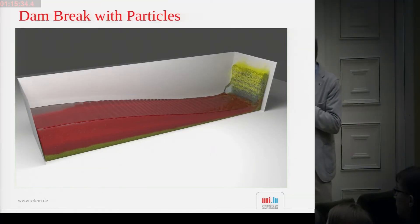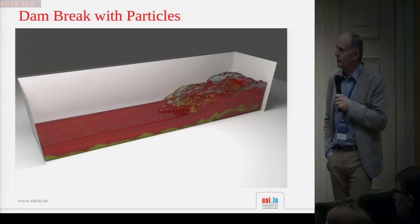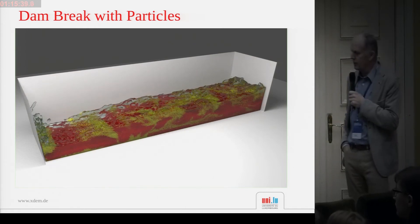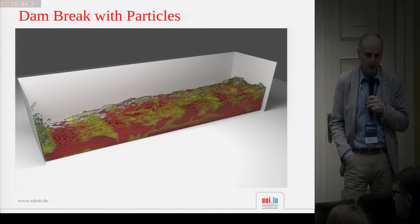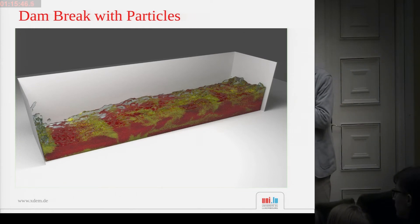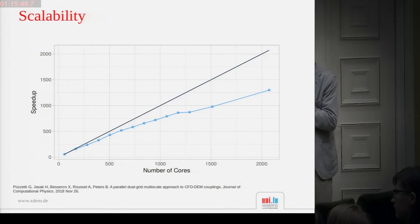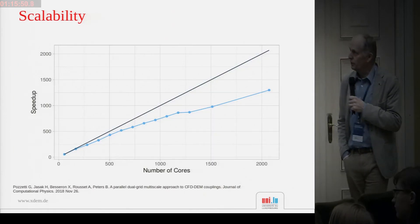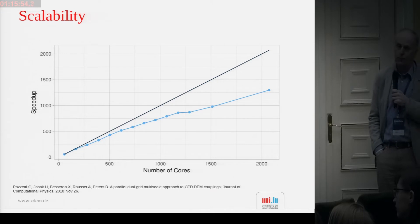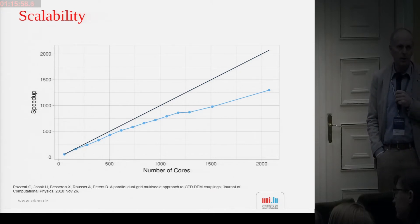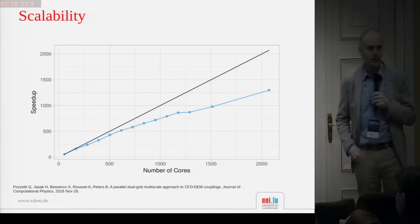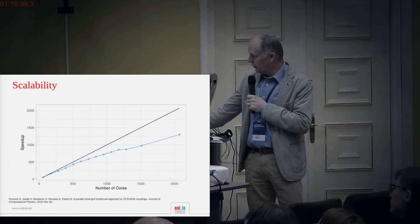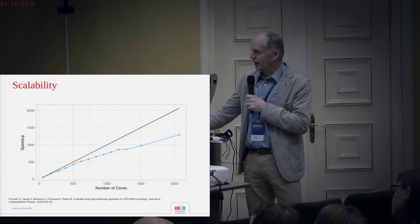Here is an example with approximately two and a half to three million particles and 10 million CFD cells. Looking at the scalability, we still achieve good scalability of almost 70% up to 2000 cores — we couldn't use more cores as that was the maximum allowed on our cluster, and it was already blocking the cluster for all other users for about half a night.